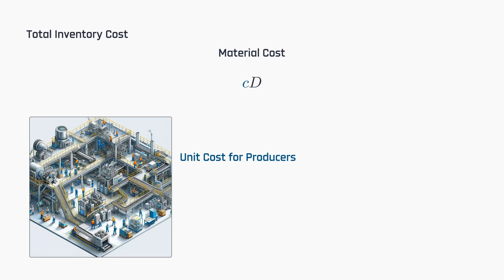For producers, the unit cost extends beyond the mere calculation of raw materials. It encompasses the total unitary production cost, which includes direct labor and overheads.